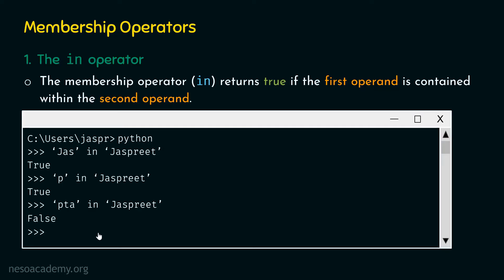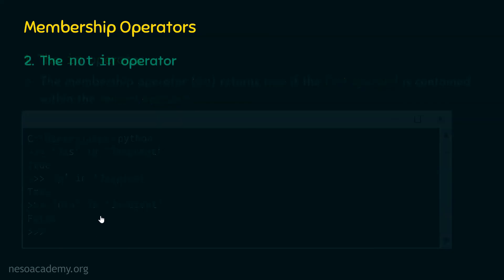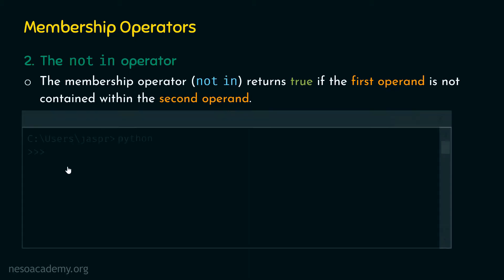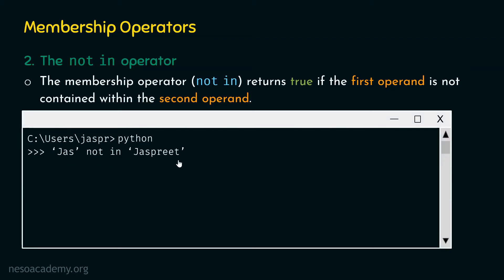I hope the `in` operator is clear. Let's move on to the `not in` operator. It returns true if the first operand is not contained within the second operand — it does the opposite of the `in` operator. Let's go to our command prompt and type `just not in jaspreet`. It returns false because `just` is contained in `jaspreet`.